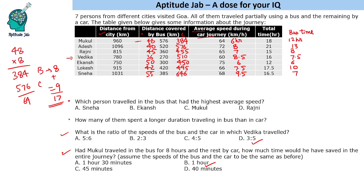That said, if your calculations are slow, refrain from doing such lengthy calculations in the exam. Which person travelled in the bus with the highest average speed? The highest bus speed belongs to Sneha. How many of them spent a longer duration travelling in bus than in car? Identifying those persons from the table, there are four such people.